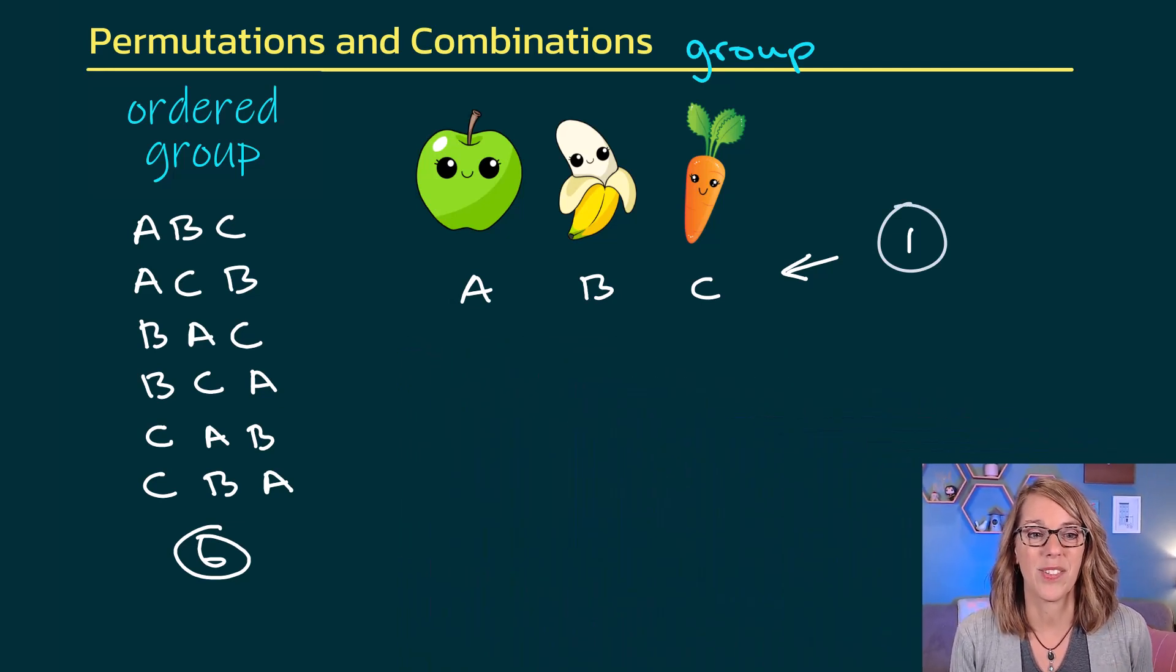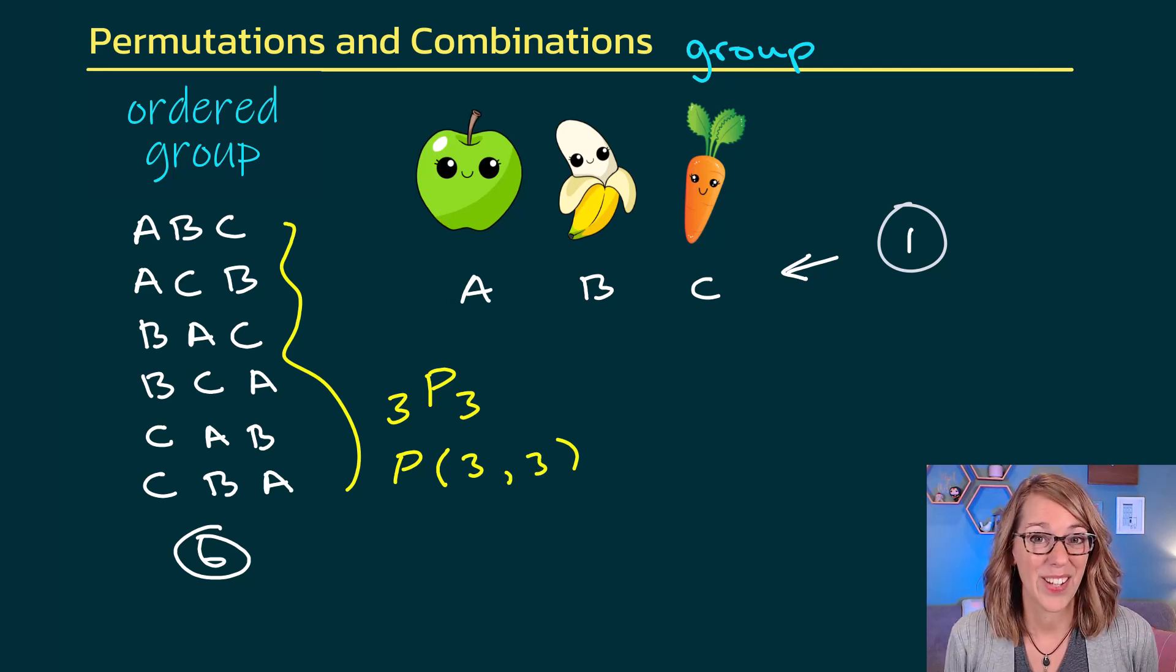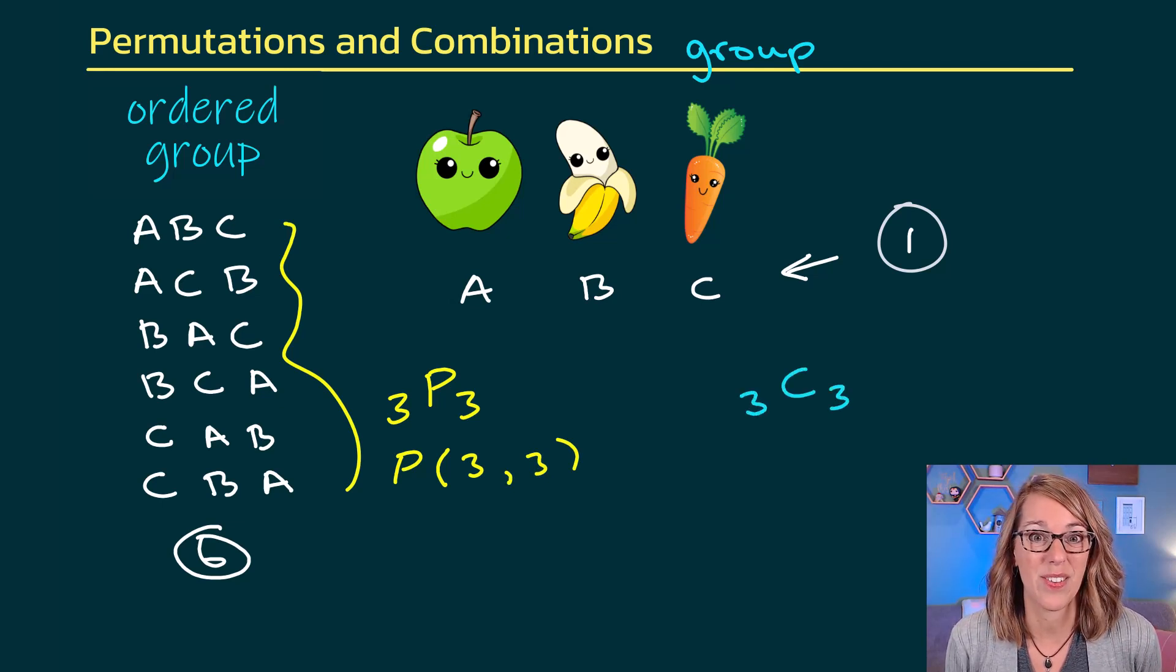If I were to express these using some mathematics, I could take my permutations and say that these are 3 items, pick 3 items. I could also write this as P(3,3). As a combination, this would be 3C3, or 3 choose 3. We could also write this as C(3,3).